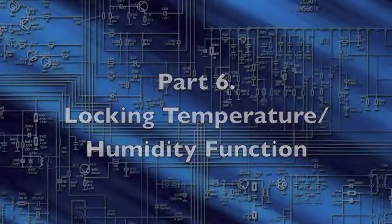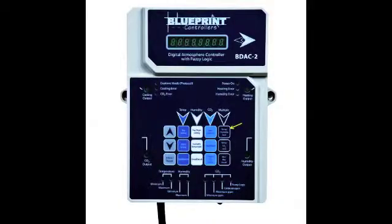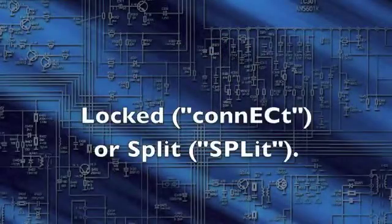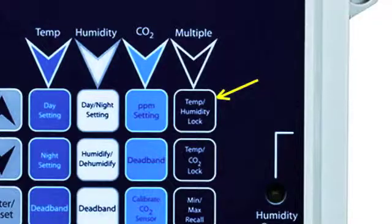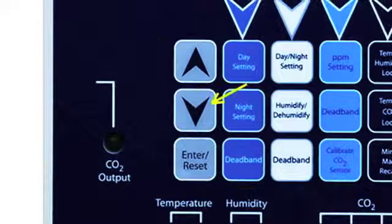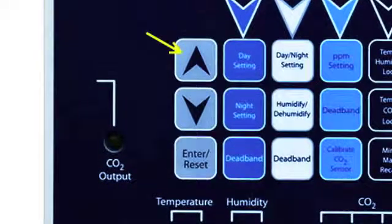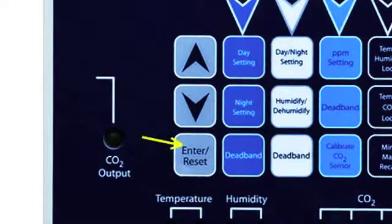Locking Temperature and Humidity Functions. The temperature and humidity functions may be set to operate locked, connect, or split. Press Temp Humidity Lock to display the current setting. Use the up and down arrow buttons to select a new setting. Press Enter Reset to accept the new setting.